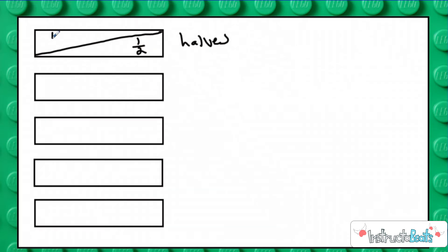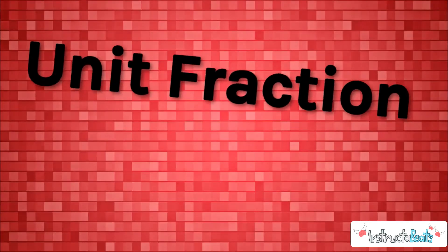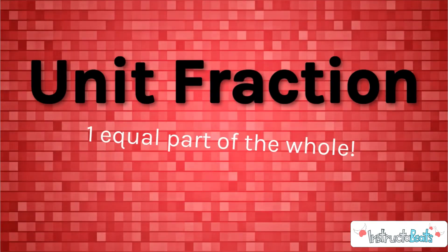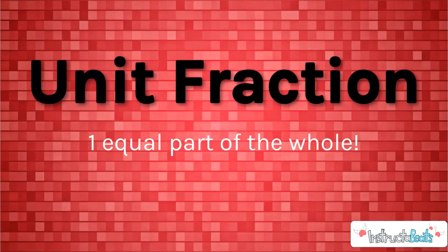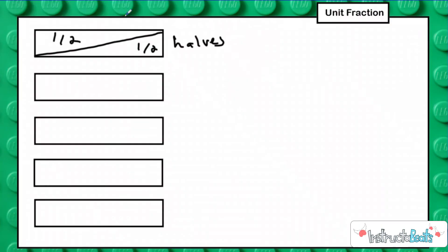What we just made is a unit fraction, which is what one equal part of the whole is worth. So when I split this whole into halves, each one was worth one half. If I wanted to write my unit fraction in words, I would write one half, or I could write that in fraction form: one half, or one out of two equal pieces.